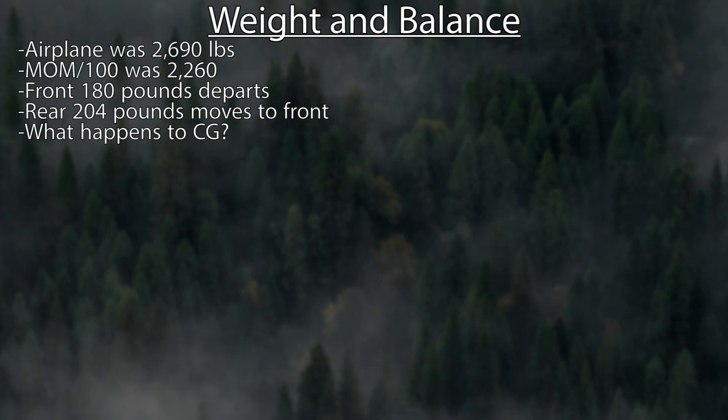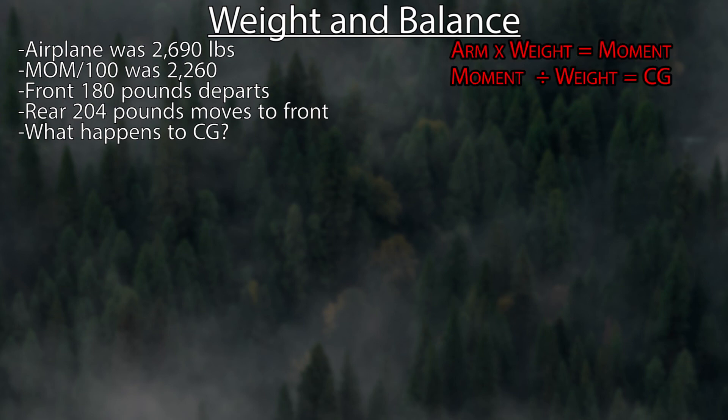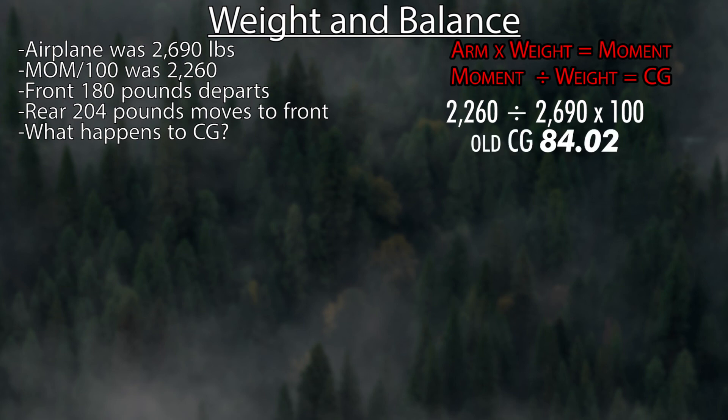Our airplane weighed 2,690 and the moment was 2,260. We need to find the old CG before passengers moved. Moment divided by weight equals CG: take 2,260 divided by 2,690, then multiply by 100 since the moment is divided by 100 in this problem. That gives an old CG of 84.02.